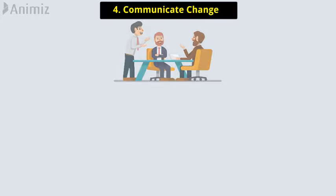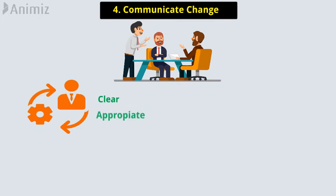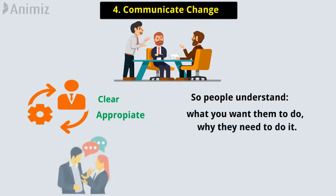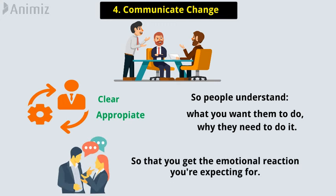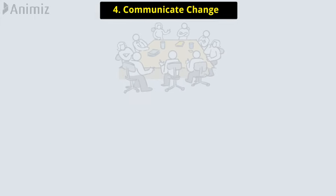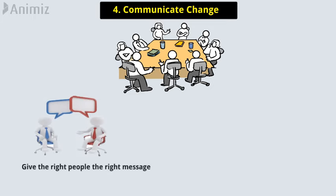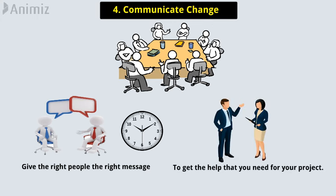The fourth principle is to communicate change. Communication is a very important component of change management. The change that you want to achieve has to be clear and appropriate, so people understand what you want them to do, and why they need to do it. But you have to set the right tone so that you get the emotional reaction you're expecting. Also, be sure to practice good stakeholder management. This will assure that you give the right people the right message, at the correct time, to get the help that you need for your project.